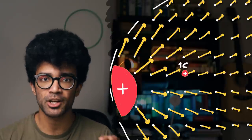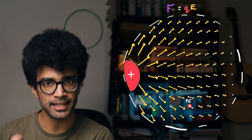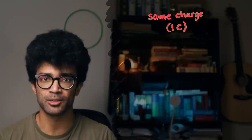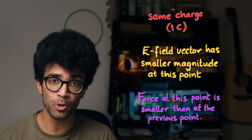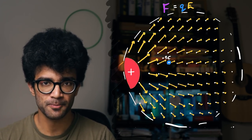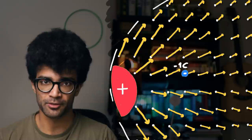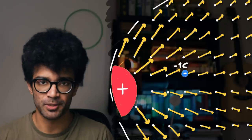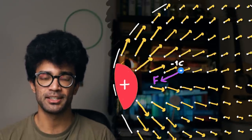As a clarifying example, we could take that same charged particle and place it at a different point in the field. The force exerted there will be in a different direction and have a smaller magnitude, because the vector at that location has a smaller magnitude. If we took a negative one coulomb charge and placed it in the field, the force exerted would be equal in magnitude but in the opposite direction.